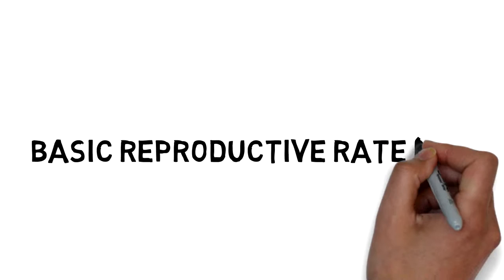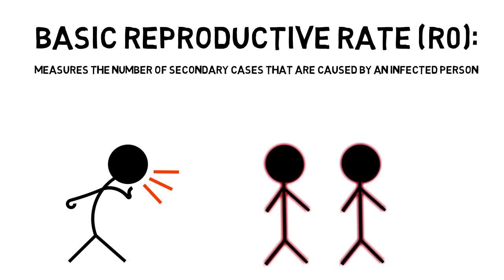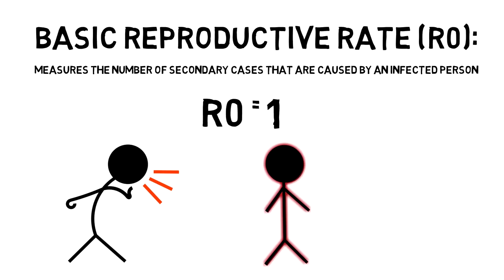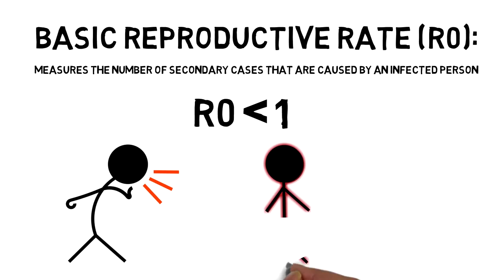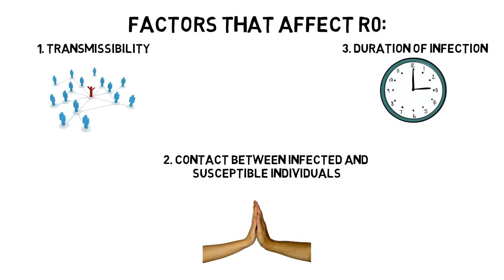You may have heard of R-naught, or the basic reproductive rate. R-naught measures the number of secondary cases caused by an infected person — basically, on average, how many people will you infect? If R-naught is greater than one, each infection causes more than one new infection, leading to exponential growth. If R-naught equals one, the disease persists but doesn't grow exponentially. If R-naught is less than one, the outbreak will not grow and will eventually die out. R-naught depends on three things: transmissibility, contact between susceptible and infectious individuals, and the duration of infection.